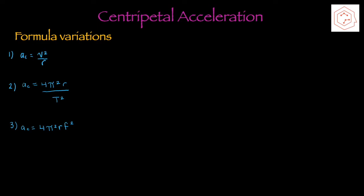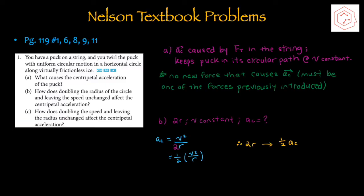V represents velocity, r represents a constant radius, and capital T represents period. Period is the amount of time required for a full revolution to occur, and has the unit seconds. Frequency is the amount of revolutions completed within a certain time. In SI units it's represented by hertz, which is 1 over second, because the revolution part is unitless. That's all for the theory for this section.